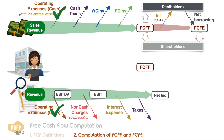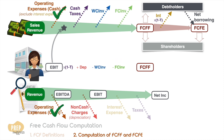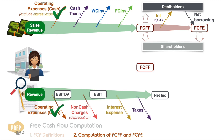Now let's calculate FCFF from EBIT. Likewise, EBIT is before taxes, so we start from here and deduct taxes. Since EBIT is after depreciation, which is a non-cash expense, we add it back. We then account for working capital investments and fixed capital investments to get FCFF.